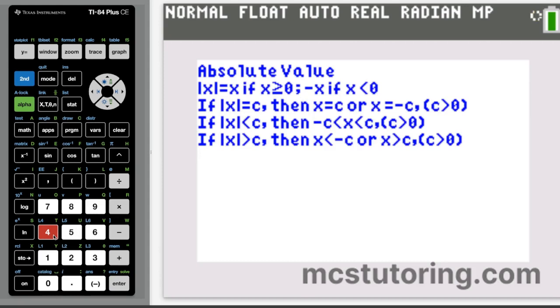So going on, we also have absolute value. Absolute value of x equals x, as long as x is greater than or equal to zero. Otherwise, it's negative x if x is negative or if x is less than zero. If absolute value of x equals c, x equals c, or x equals negative c, so long as c is greater than zero. If absolute value of x is less than c, then we have negative c is less than x is less than c. Again, c is greater than zero. And if absolute value of x is greater than c, then x is less than negative c, or x is greater than c, c is greater than zero.